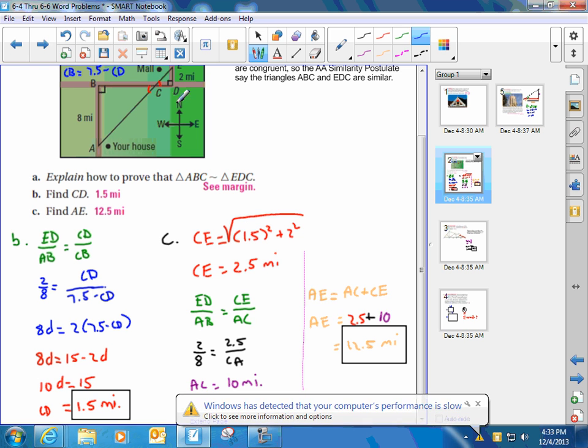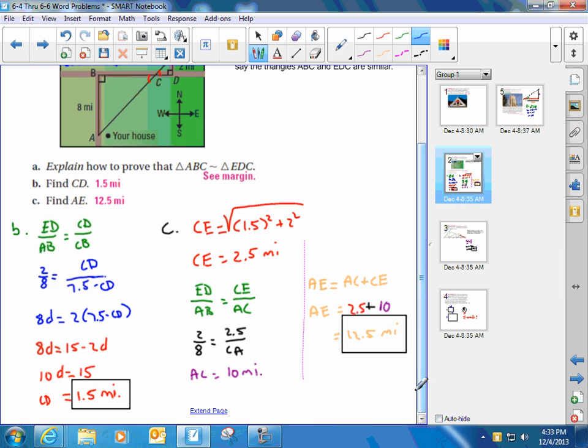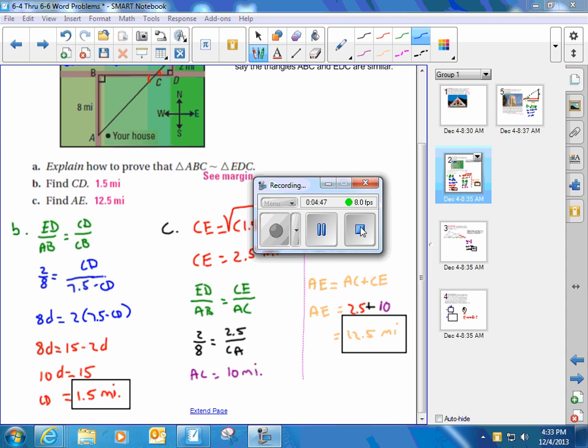So AE is going to be 2.5 plus 10, which is 12.5 miles. That's an example of indirect measurement. We could have found AC different ways, but that's just one way you can do that. I hope that helps. Thanks for now.